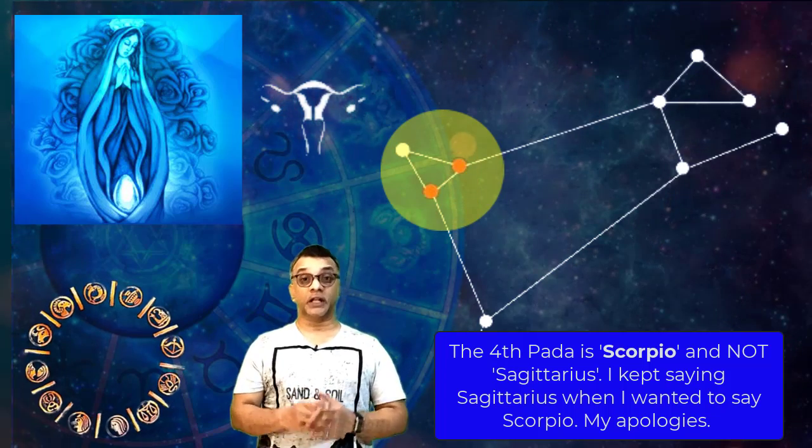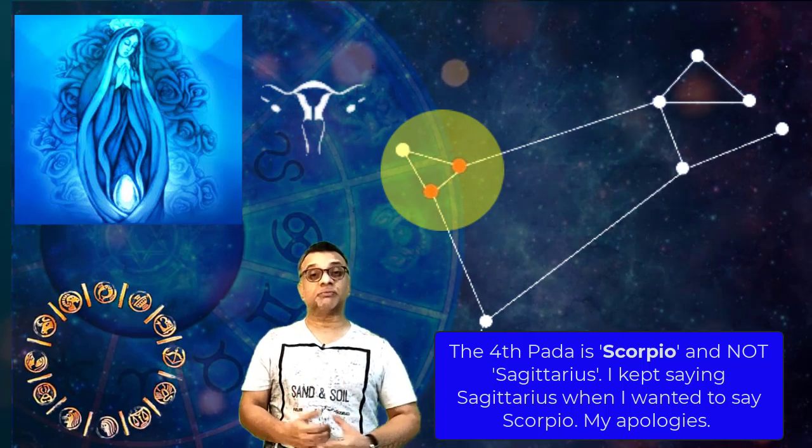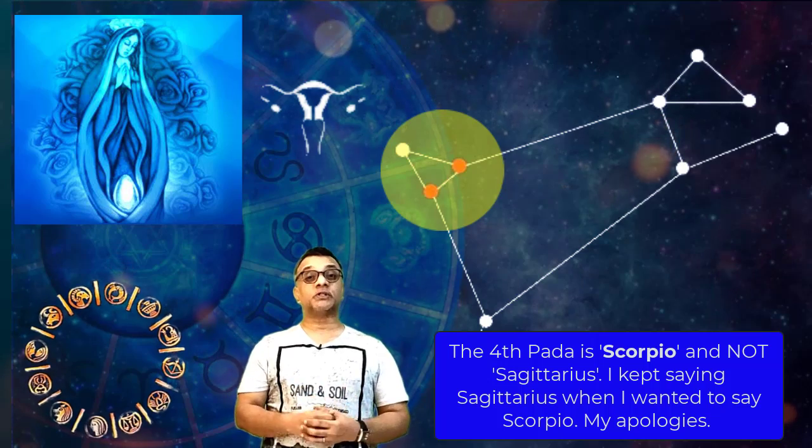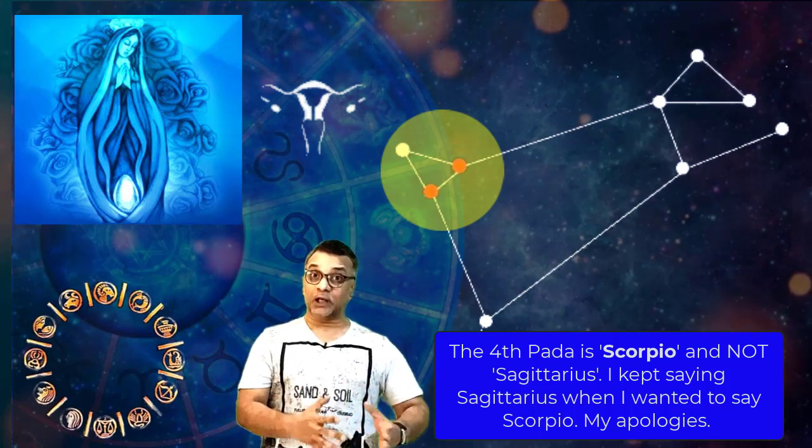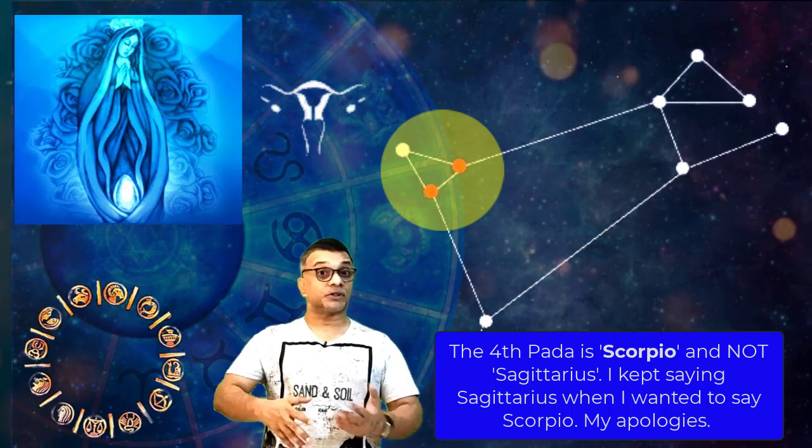If it is lying in the Libra pada, the Libra navamsa, then the relationships become very very important. Such a person can be very very committed, but if the other person is not being able to value this person, then the opposite side of the relationship orientation can come in with the person looking for solace outside of the relationship.